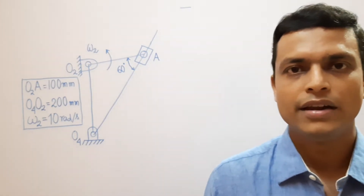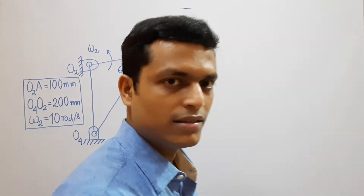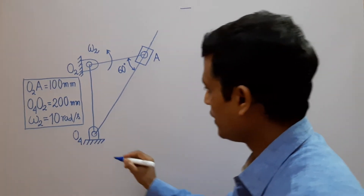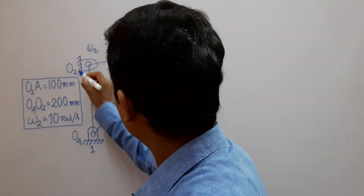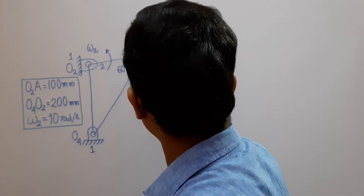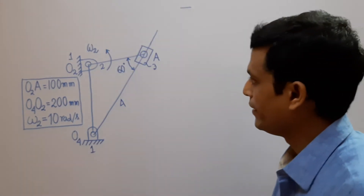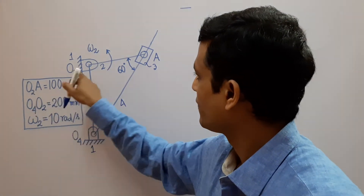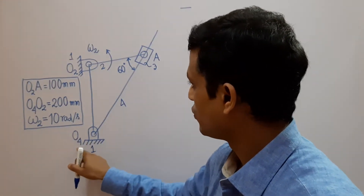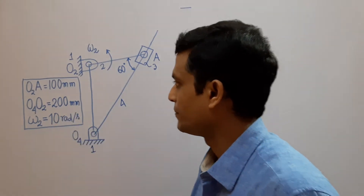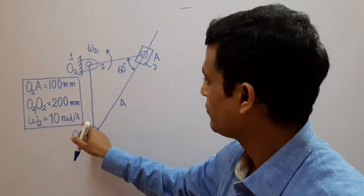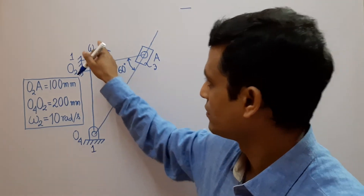Let me describe the problem. This is a quick return mechanism O4, O2, A where the fixed link is 1, crank is 2, the slider is 3, and the oscillating link is 4. The length of the crank O2A is 100 millimeters. The length of the fixed link O4O2 is 200 millimeters, and the crank is rotating at 10 radians per second in the counterclockwise direction as shown in the figure.